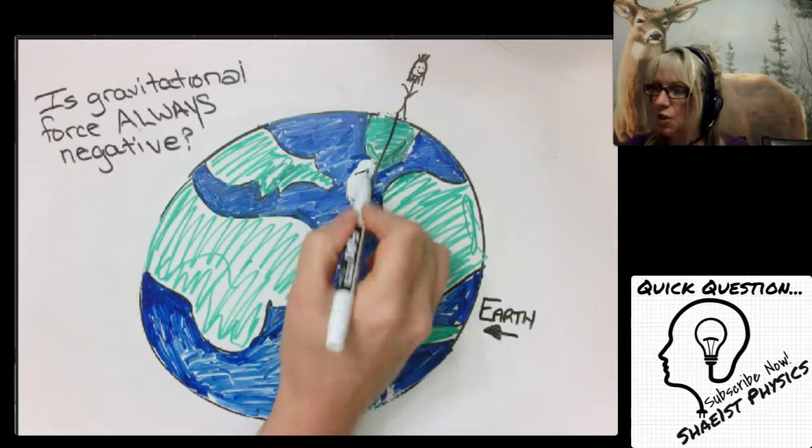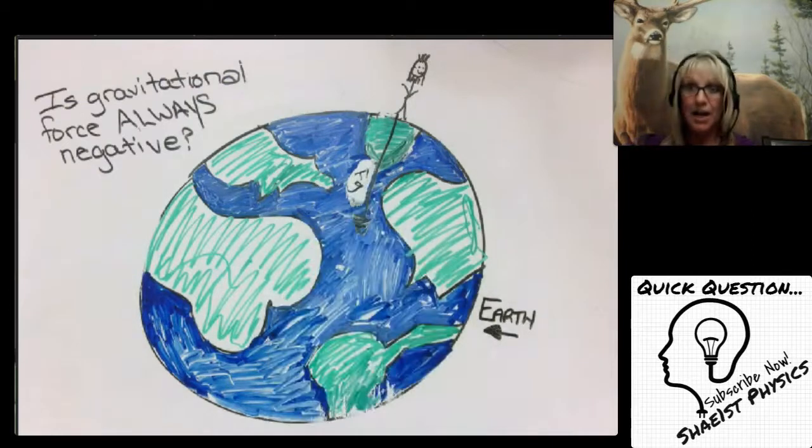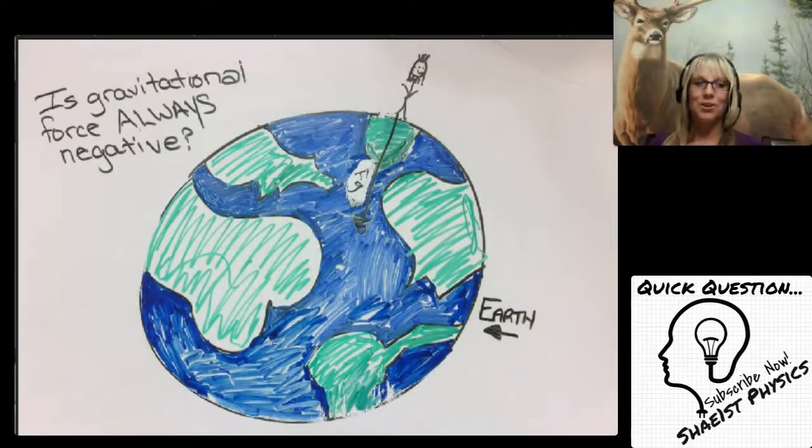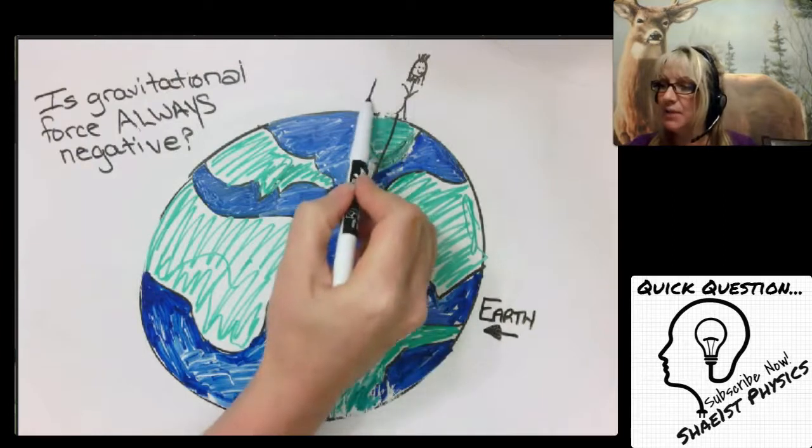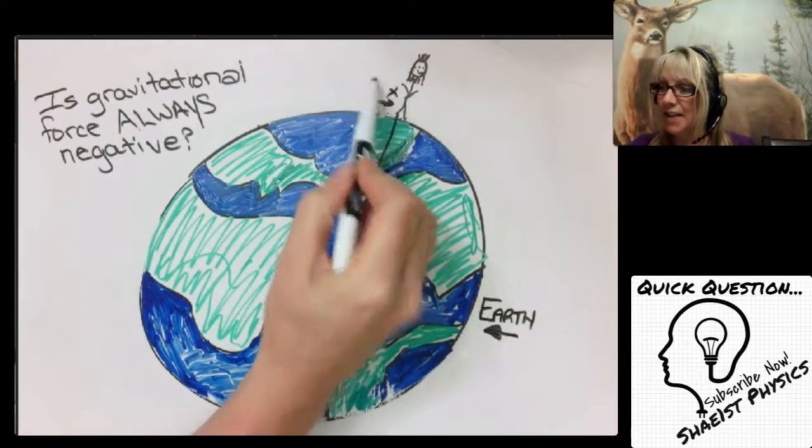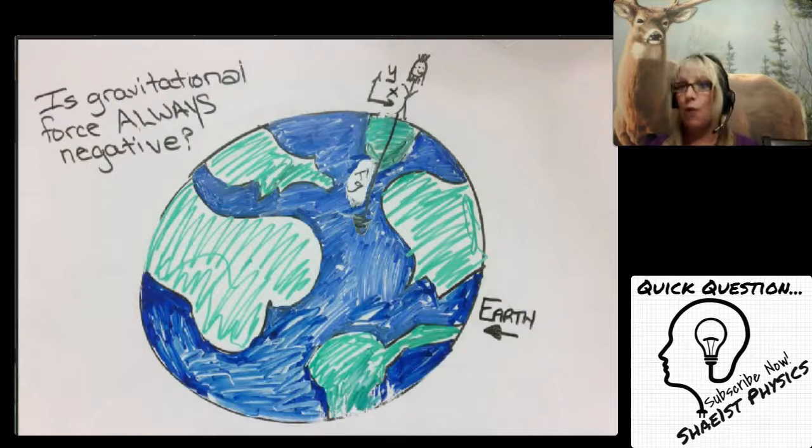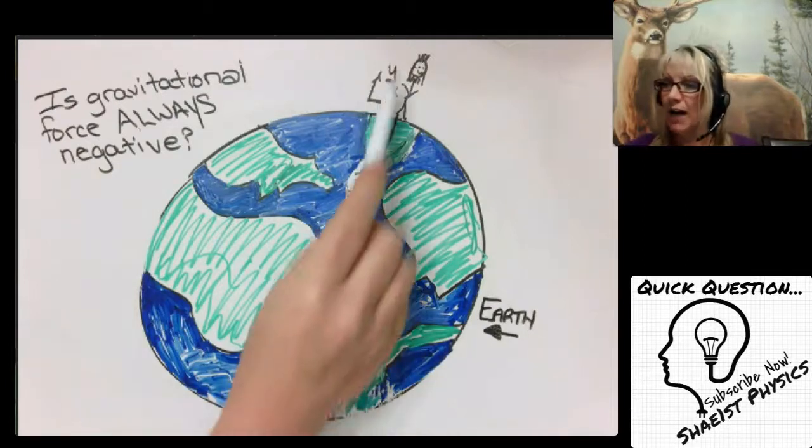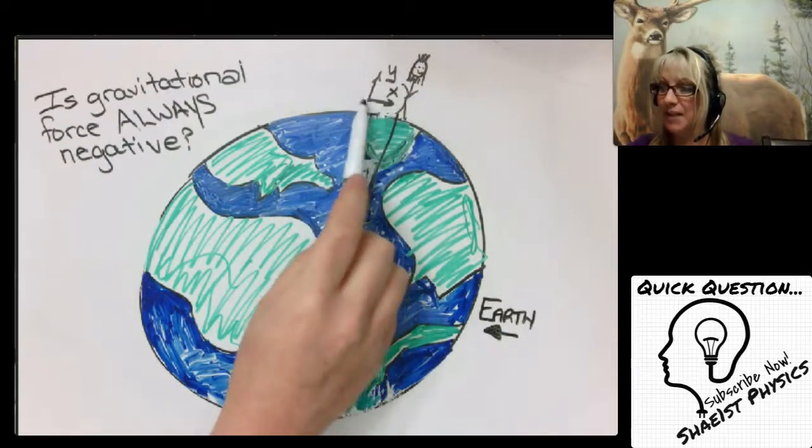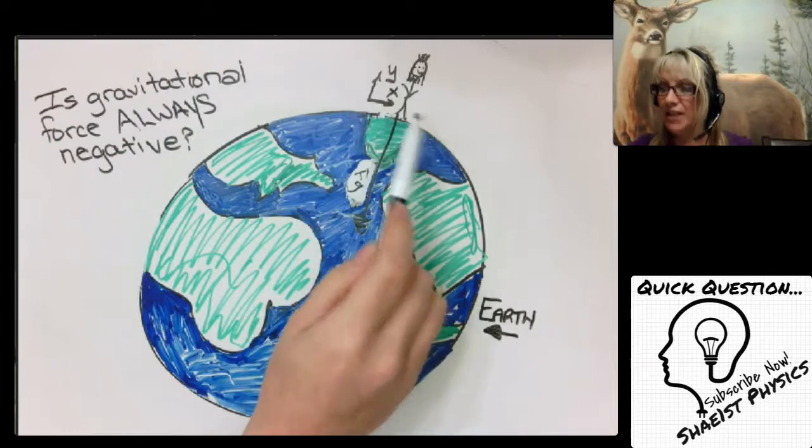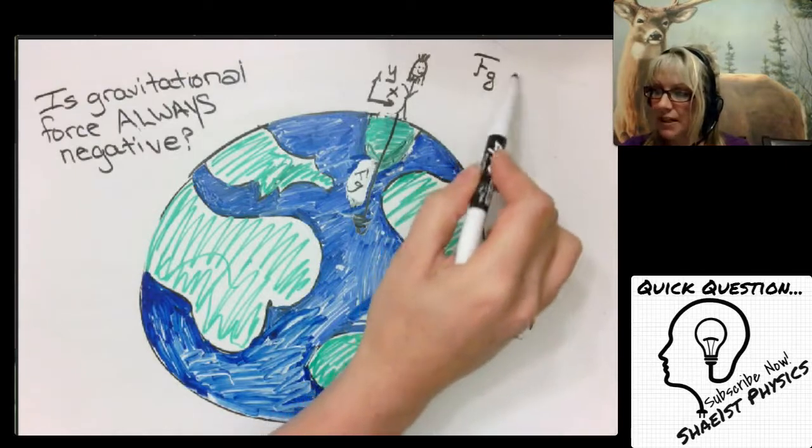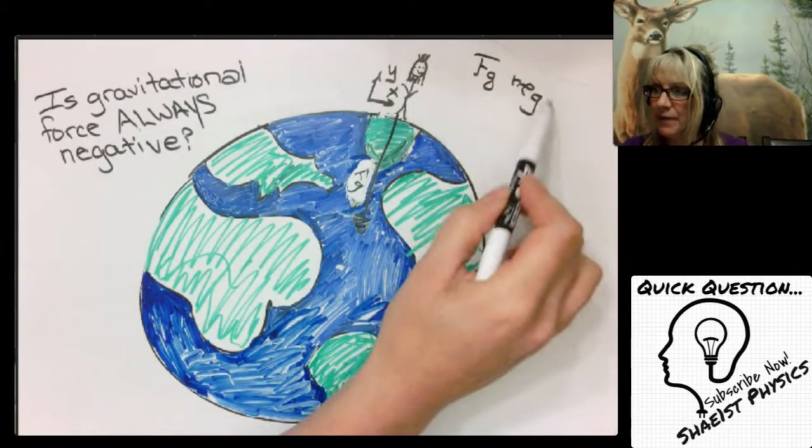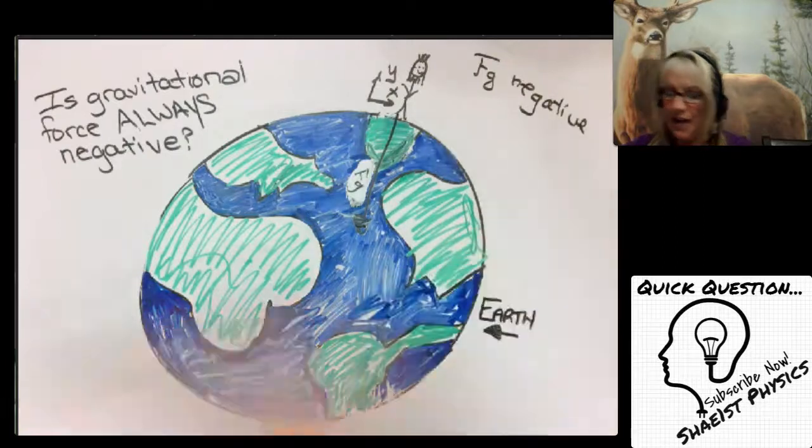That's always going to be the case unless you're on another planet, but it'll always go towards the center of whatever that planet is. Determining whether this is positive or negative depends on what our axis is set up as. If we do a standard axis where we're saying y positive is going up and x positive goes to the right, well then in this case yes, Fg is going to be negative.